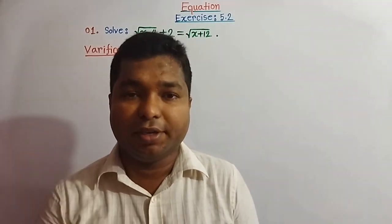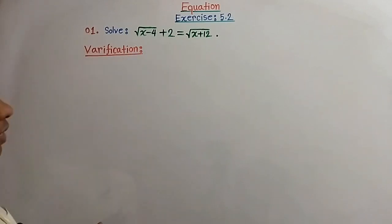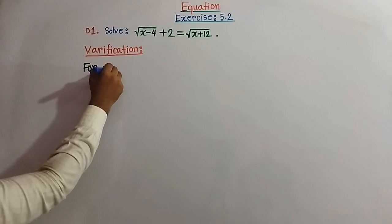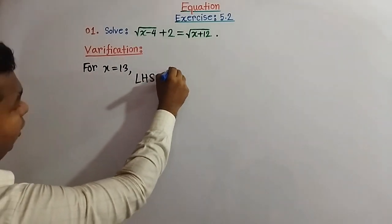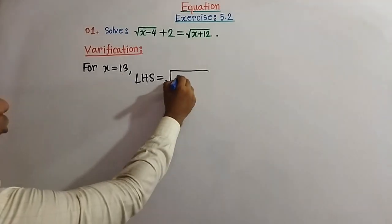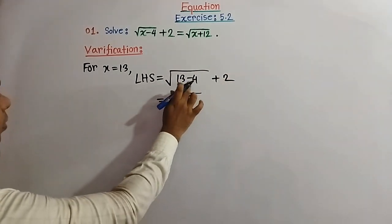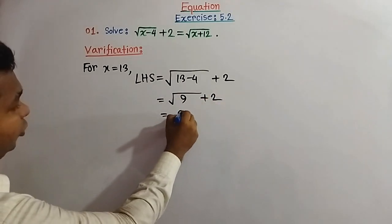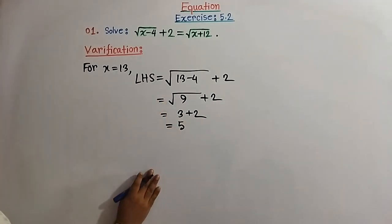We show the verification of this equation. We have only one root, x equal to 13. Verification for x equal to 13: the left hand side of the given equation equals square root of (x minus 4) plus 2. Substituting x equal to 13: square root of (13 minus 4) plus 2 equal to square root of 9 plus 2 equal to 3 plus 2 equal to 5. So left hand side equals 5.